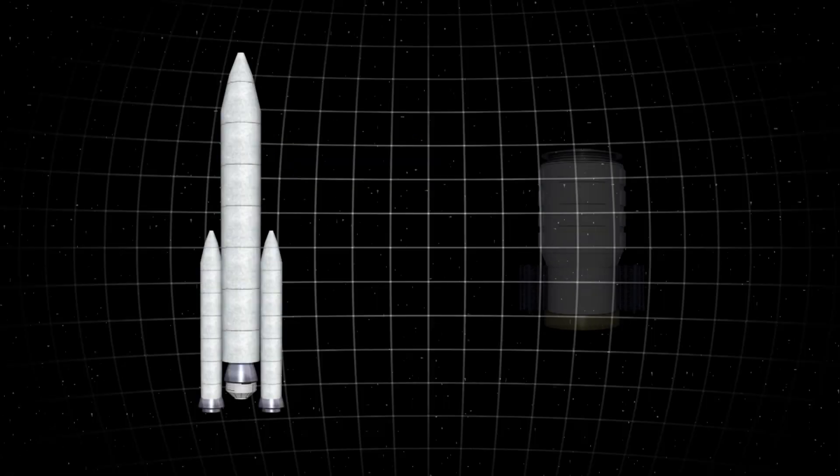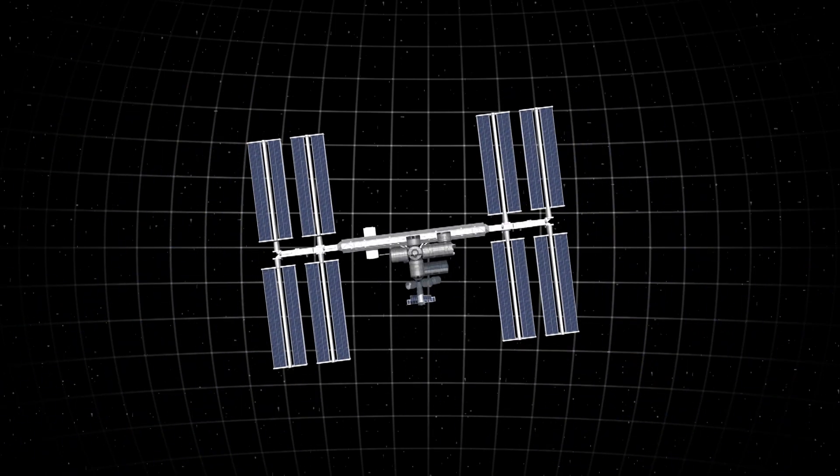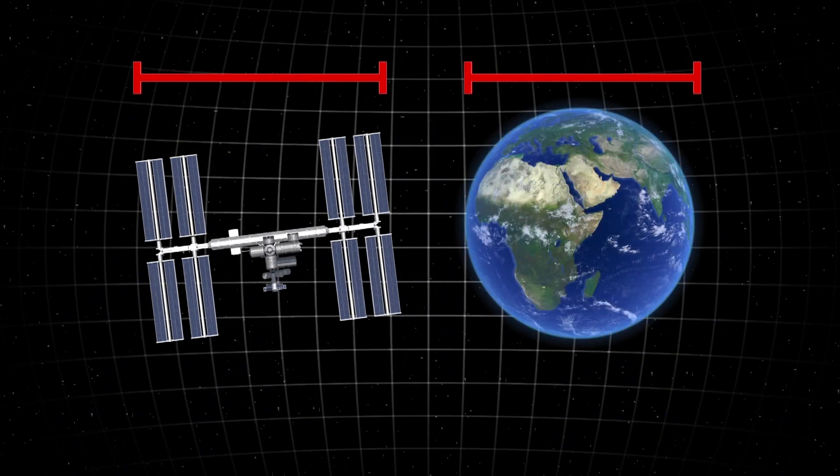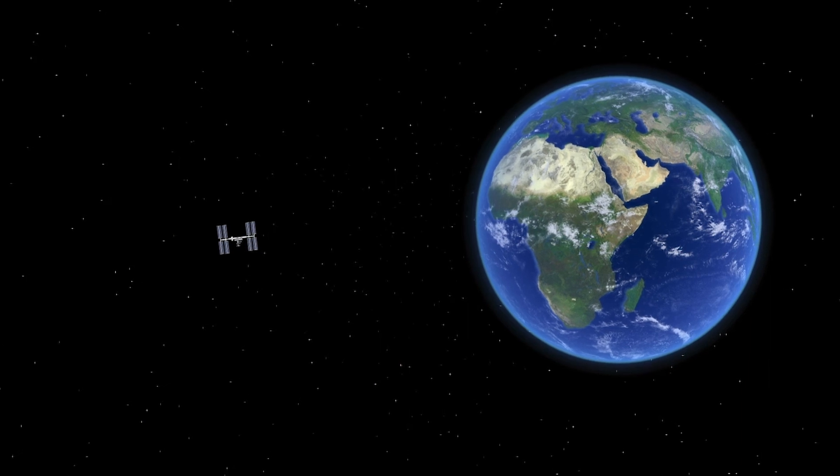Much of the debris vary in size, but one of the largest spacecraft near Earth is the ISS. It measures 109 meters at its widest points, while the planet itself is over 12,000 kilometers in diameter, meaning even that is just 0.0008 percent the size of Earth.